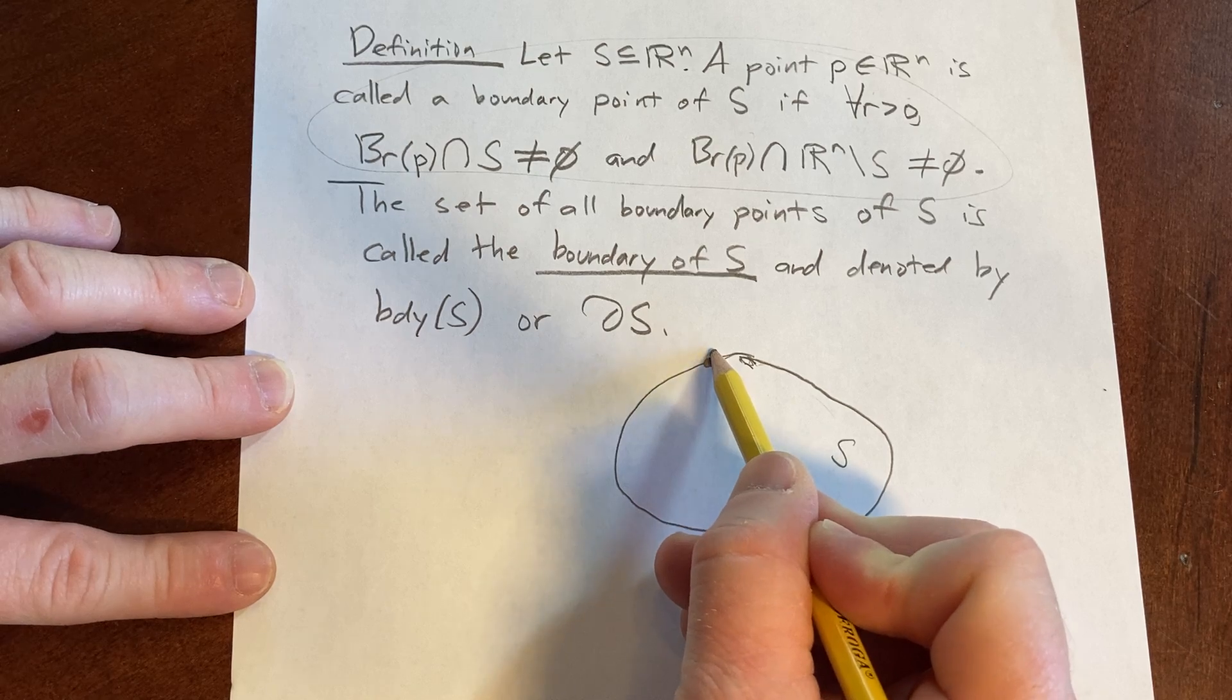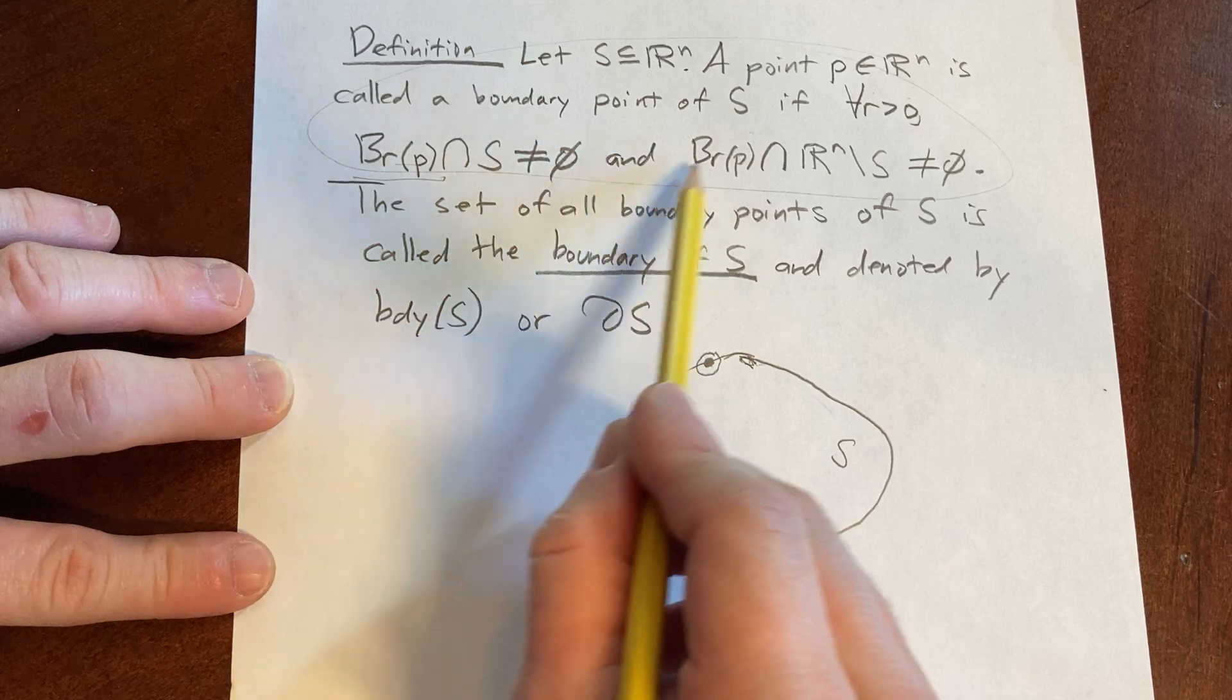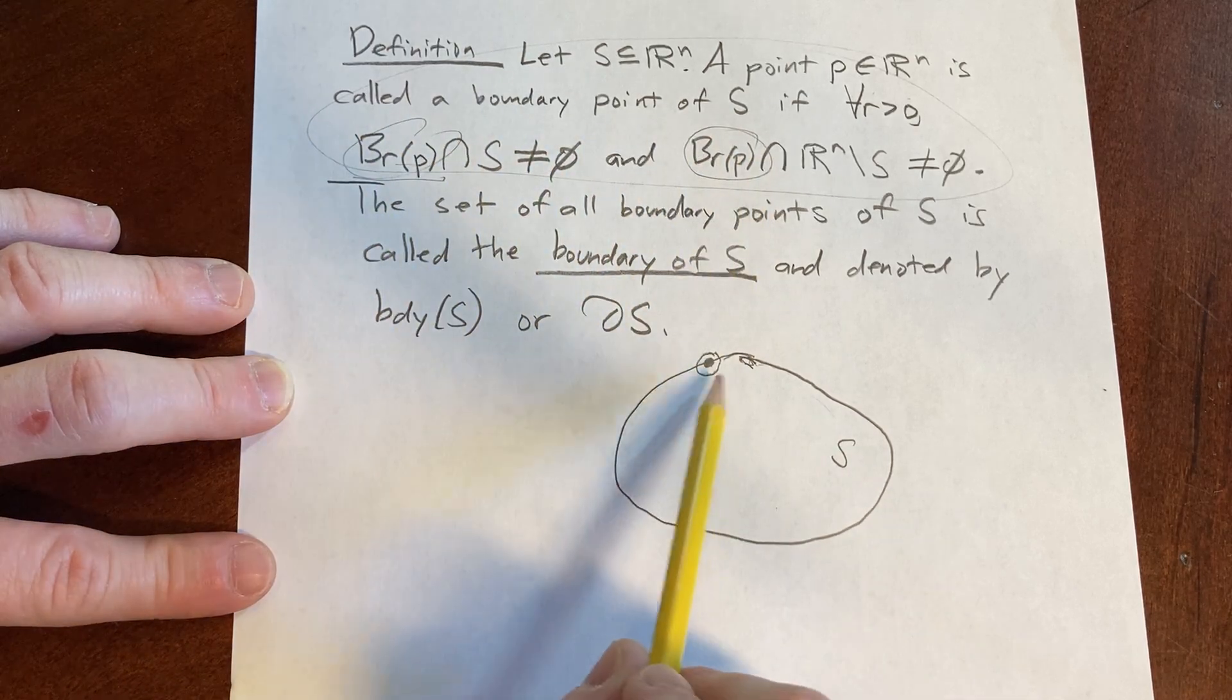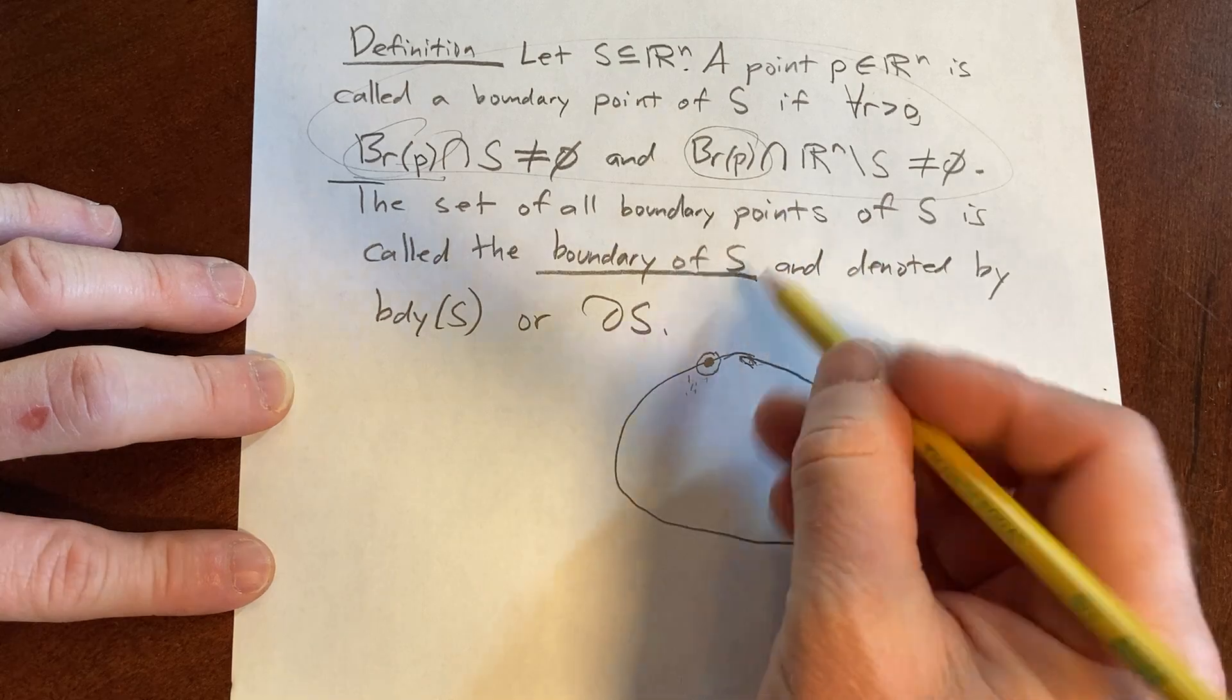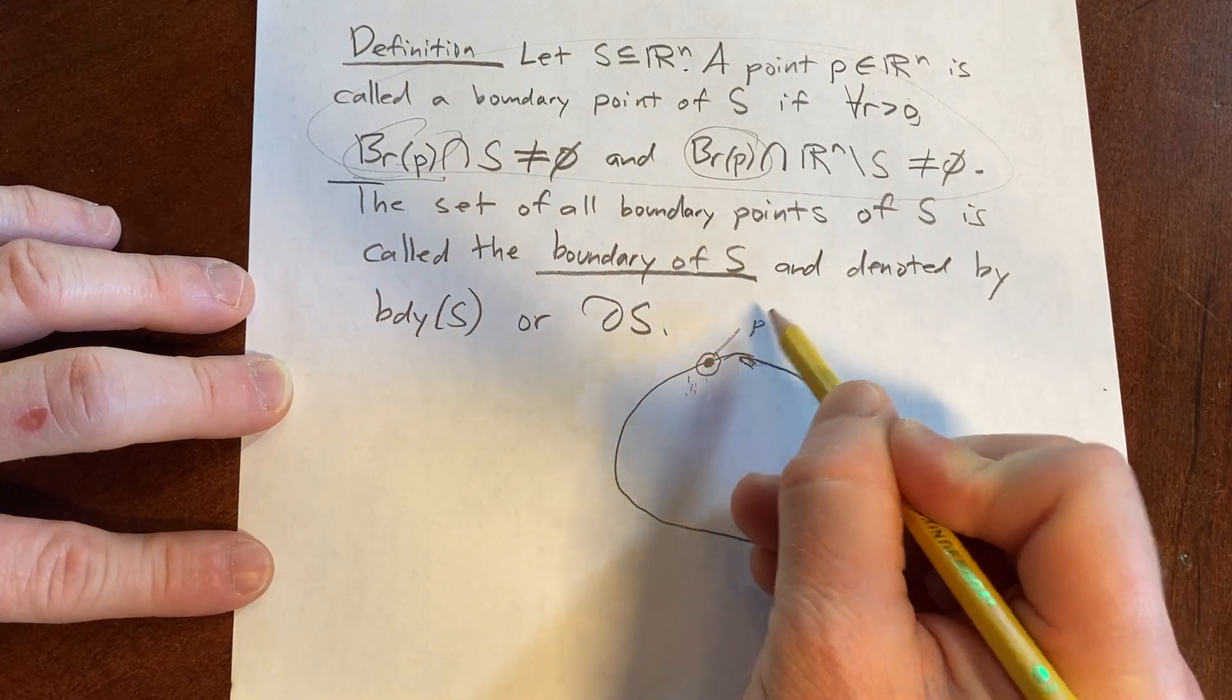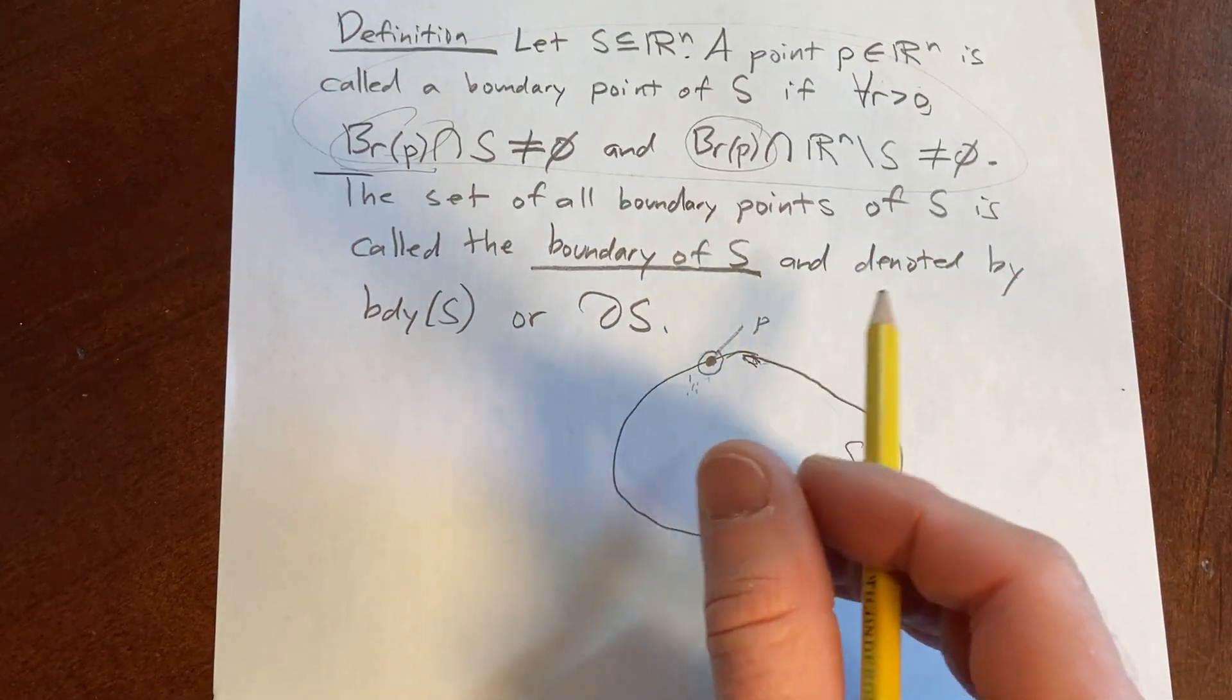So if I look at an open ball centered there, it doesn't matter how small it is. So that's BR(P). It's that little ball I drew, that's B sub R P. That's our open ball centered at P, of radius R. And so I can make that ball smaller and smaller, but that's what it would look like.